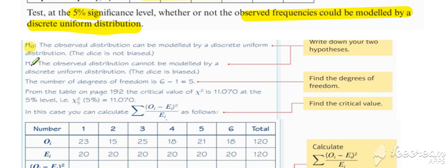So state your null and your alternative. Observed distribution can be modeled by discrete uniform distribution. Dice is not biased and cannot be modeled by discrete uniform. Try and set up the null and alternative with reference to context the way we've got that to work with.